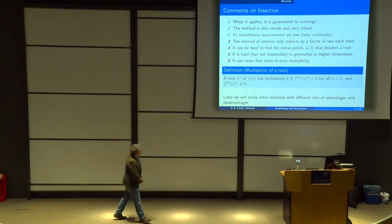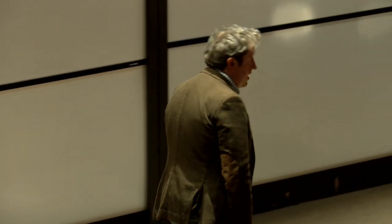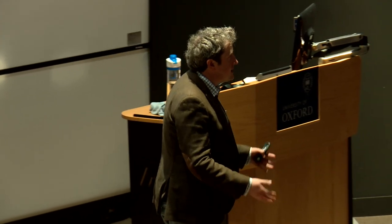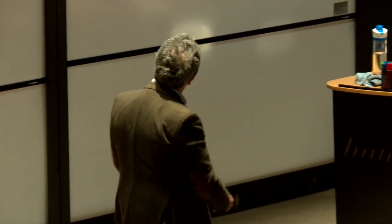Later we will study other methods with different sets of advantages and disadvantages. Before we move on — a palette cleanser — I want to shift gears a little to talk about a different topic, which is the rate of convergence of a sequence. This is one of the ways we'll characterize whether we like algorithms — whether they converge quickly or slowly — so we need to discuss this in mathematical terms.